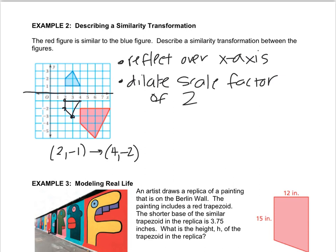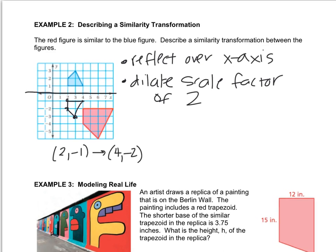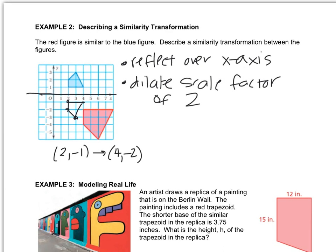Now you could do that in reverse. You could say you would dilate the red figure by 1 half, and then reflect over the x-axis. That's fine. It doesn't say which one you had to start with. I probably should say which one I did. So reflect blue figure, and then you would dilate with a scale factor of 2.